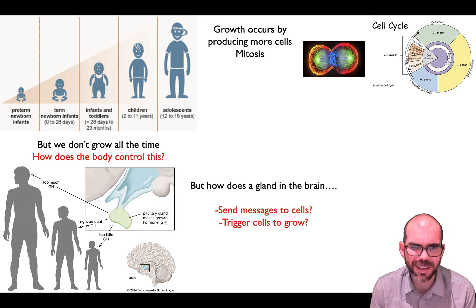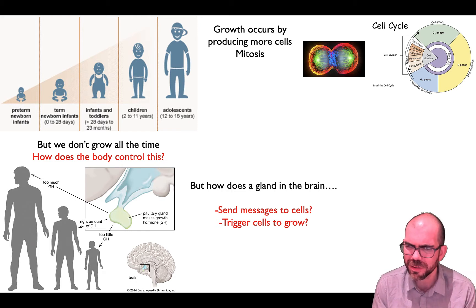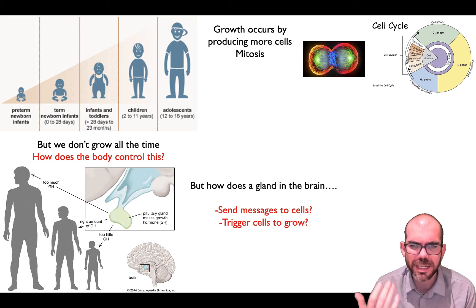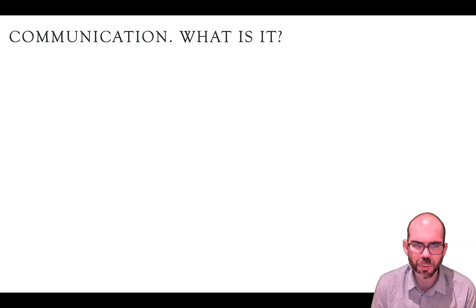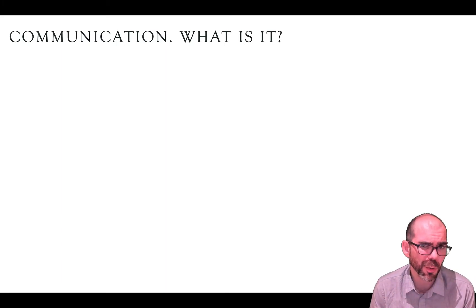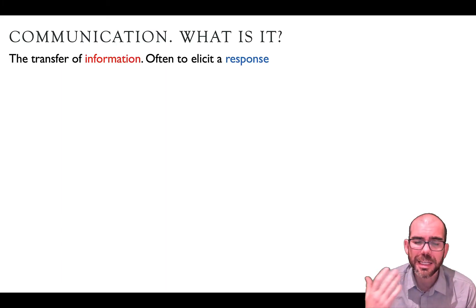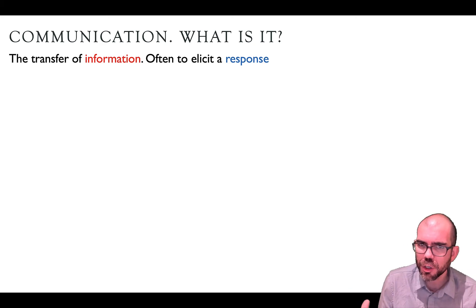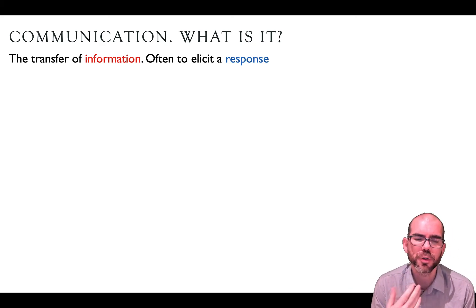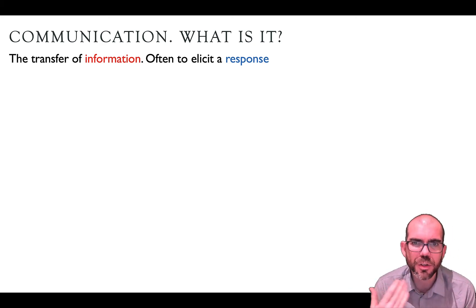How does a gland in the brain send messages to cells? And how is this triggering cells to grow? To understand this, we need to think globally about communication. So what is communication? The definition we're going to use is: communication is the transfer of information, often to elicit a response.